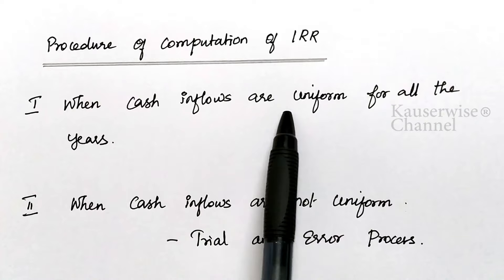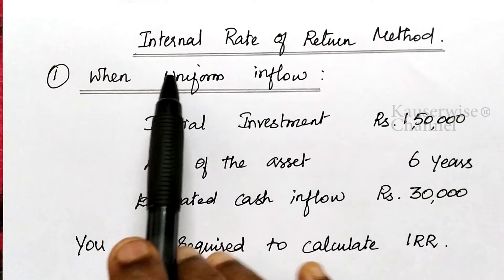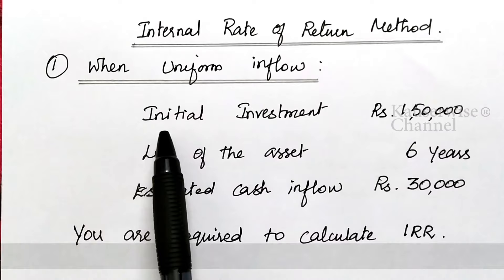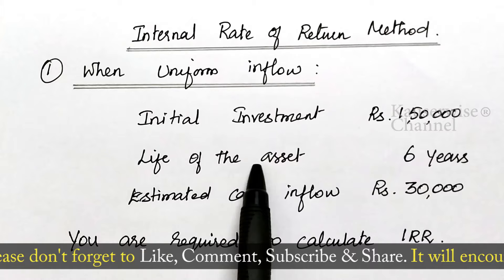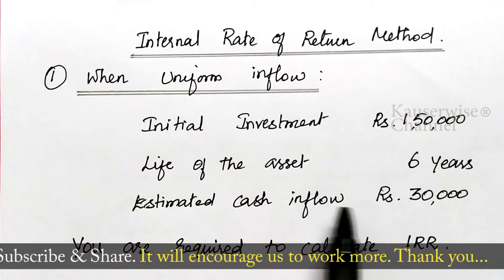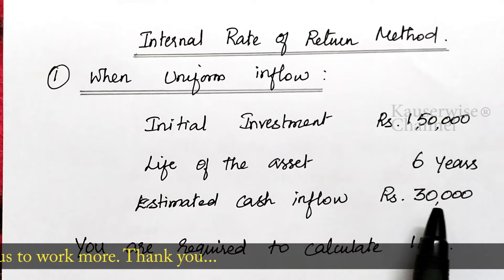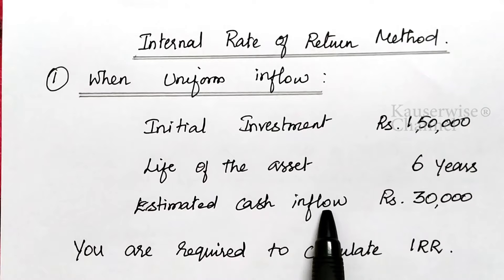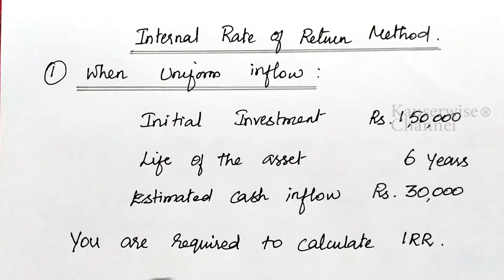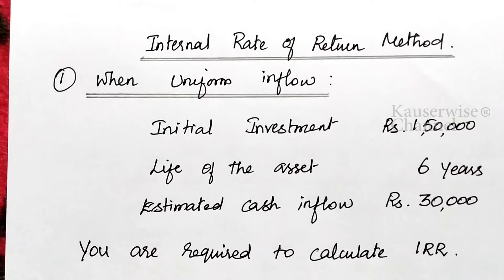Now let us see the first problem for calculation of IRR when uniform inflows are given. The first information: initial investment (the outflow) is one lakh fifty thousand. The second: life of the asset is six years. The estimated cash inflow is thirty thousand per year — uniform inflow — so every year they expect thirty thousand. With this information, they ask you to calculate IRR.